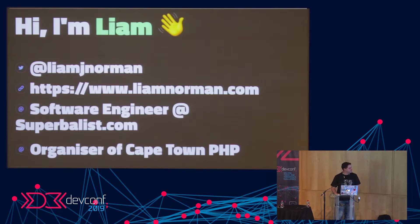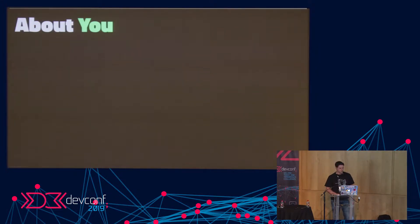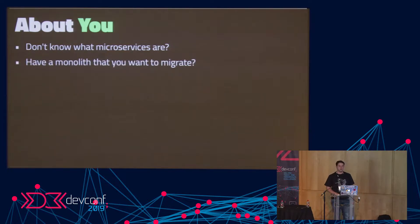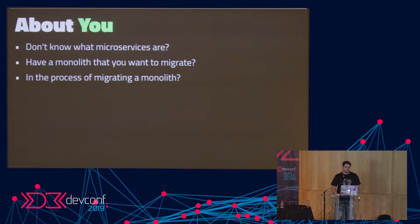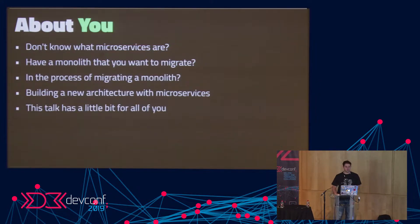You can see me on Twitter at Liam J. Norman. I sometimes blog at liamnorman.com. I'm a software engineer at superbolist.com and I'm an organizer of Cape Town BHP. Hopefully one of these describes you and that's why you're here — you either don't know what microservices are, you have a monolith you want to migrate, you're in the process of migrating, or you're building a new architecture with microservices. This talk is a little bit for all of you.